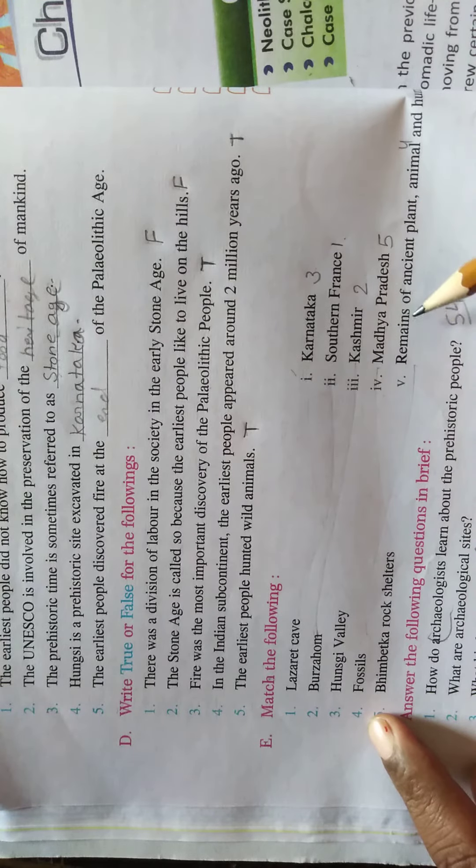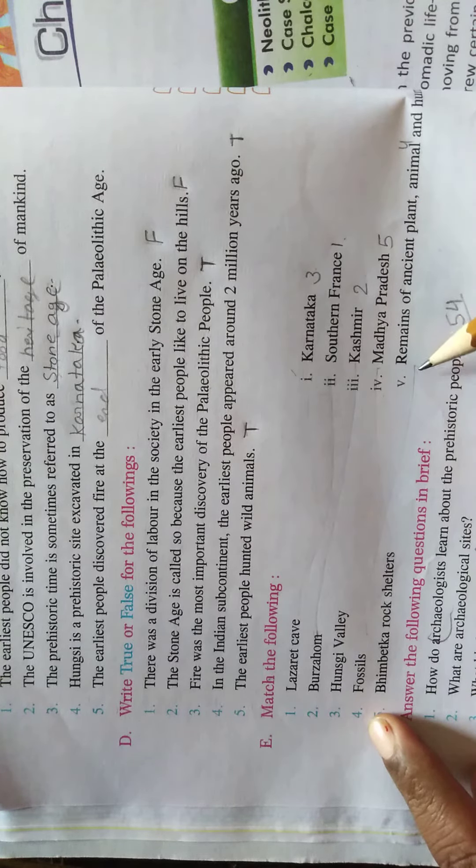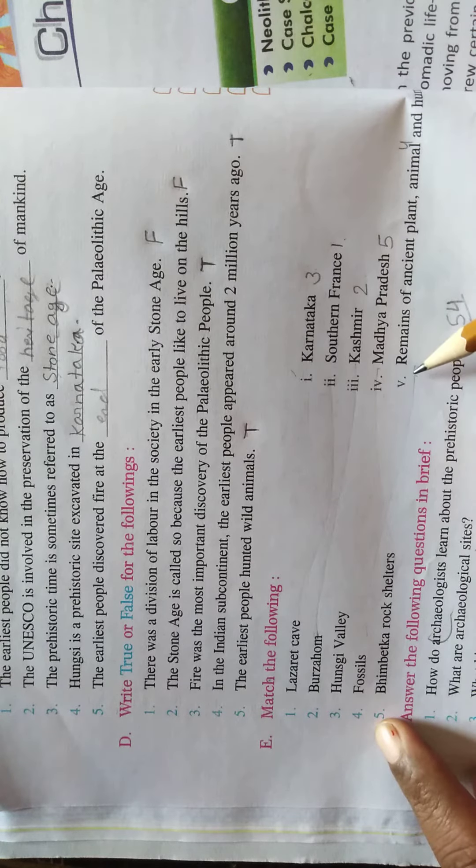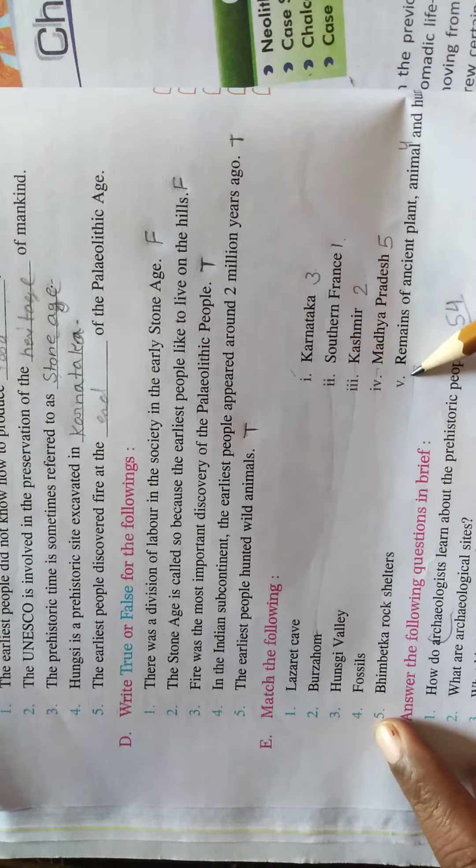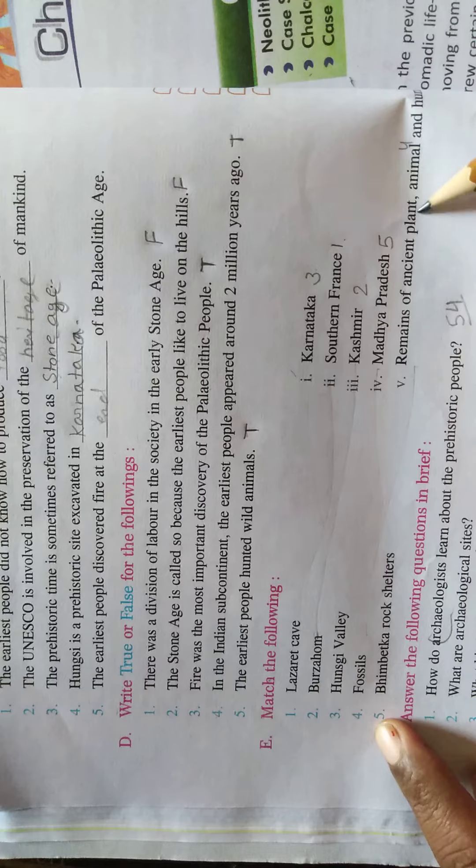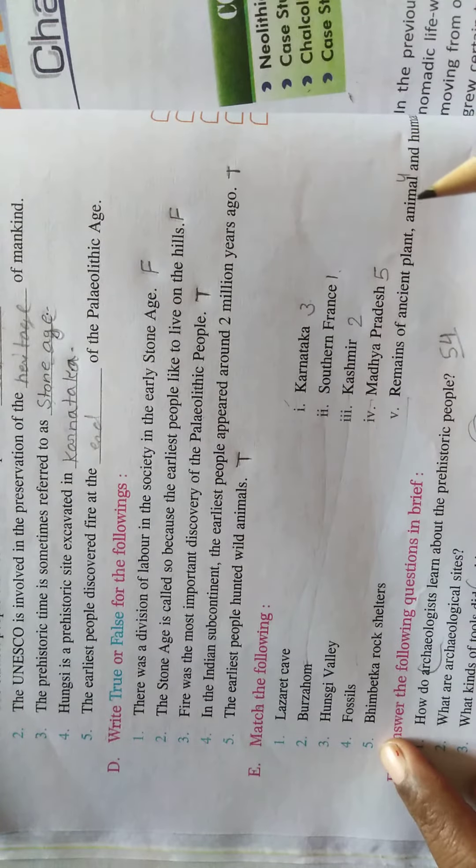And fourth, matched with V options. Fourth, fossils matched with V options. Fifth option, remains of ancient plants, animals and humans. And fifth, we meet car rock shelters in Madhya Pradesh.